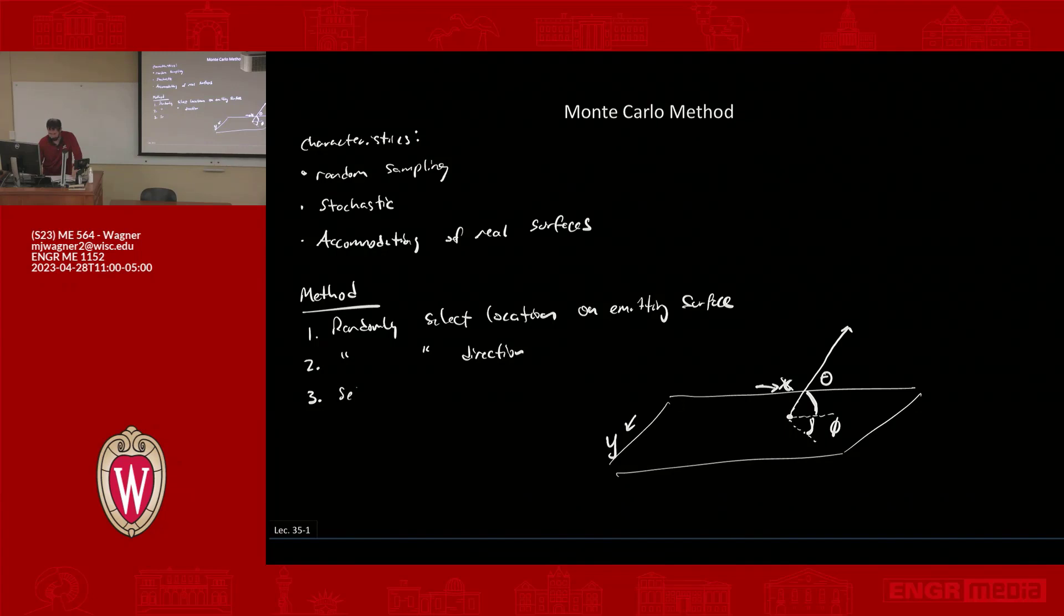Step three would be, if it's non-gray, select a wavelength. So let's say I wanted to do this for surfaces that have properties that vary as a function of wavelength, or transmission that varies as a function of wavelength, or something like that.